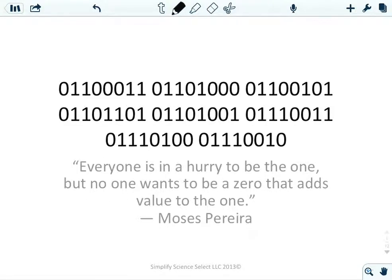We're going to start talking about chemical equations. We see all the binary up there — hopefully we've figured out what that means by now. The quote we have is: 'Everyone is in a hurry to be the one, but no one wants to be the zero that adds value to the one.'